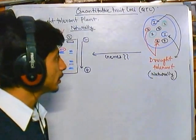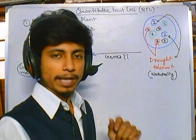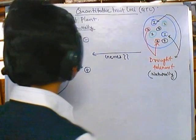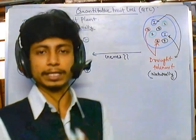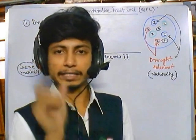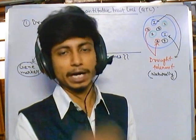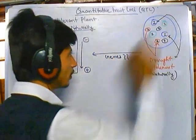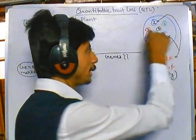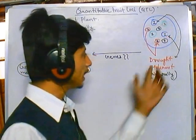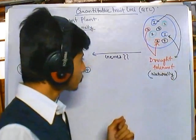To understand QTL mapping, you must first understand marker-assisted selection. In brief, we have four different types of plants, and the actual goal of our experiment is to select only those plants which are drought tolerant. Over years of observation, we found that plant species type 1 and C are naturally more drought tolerant than the rest.